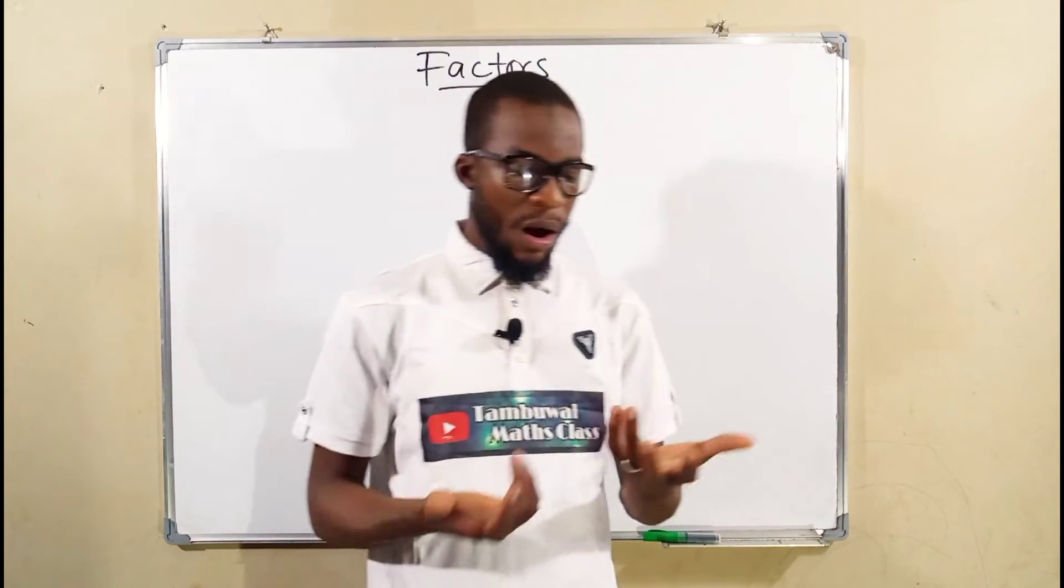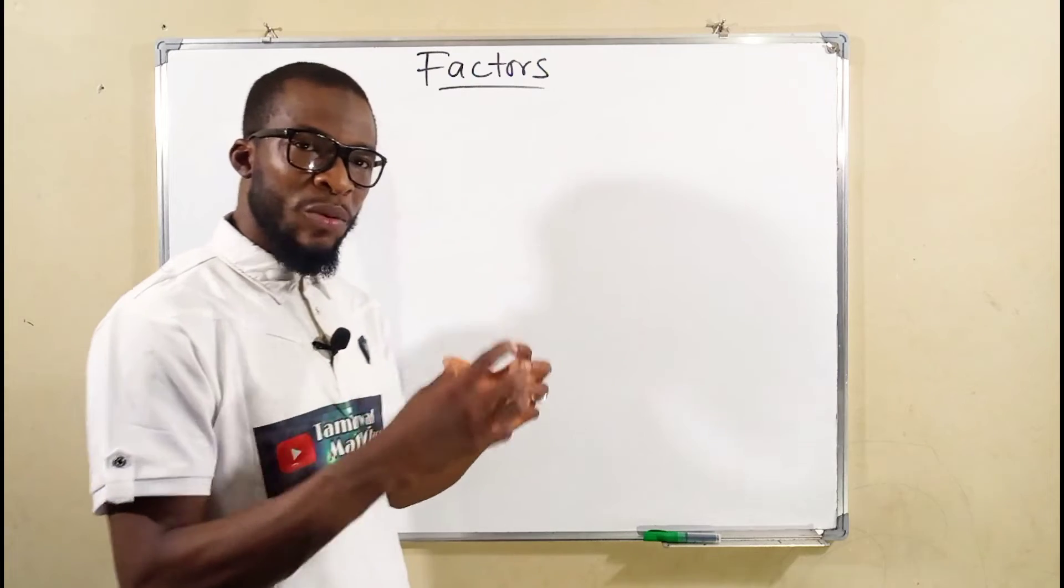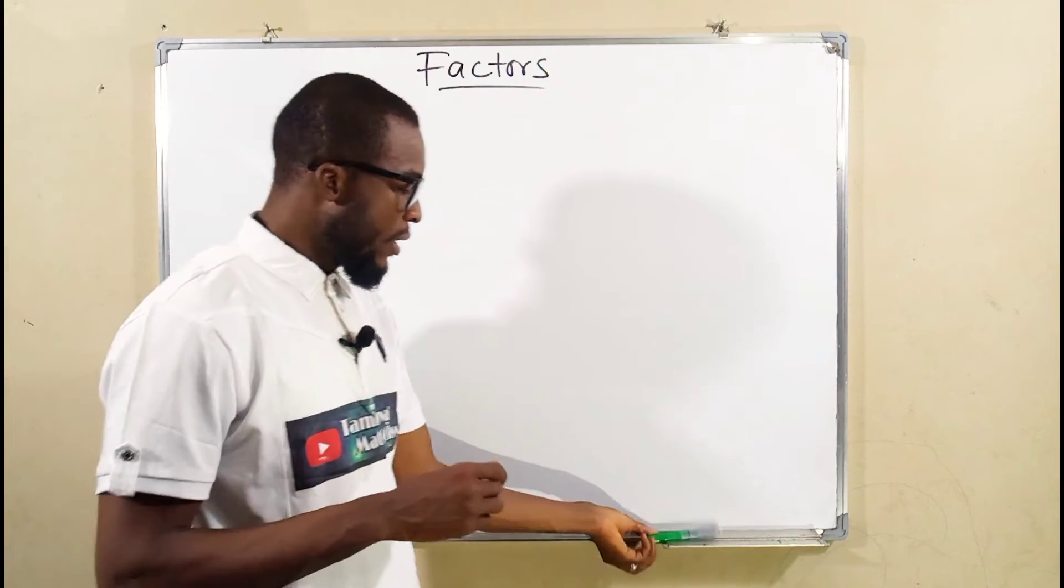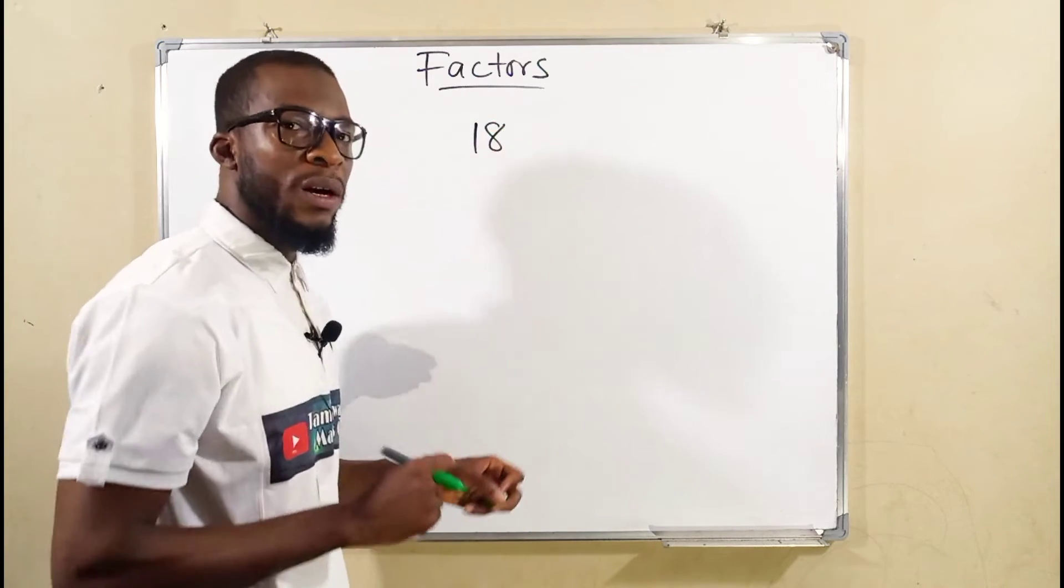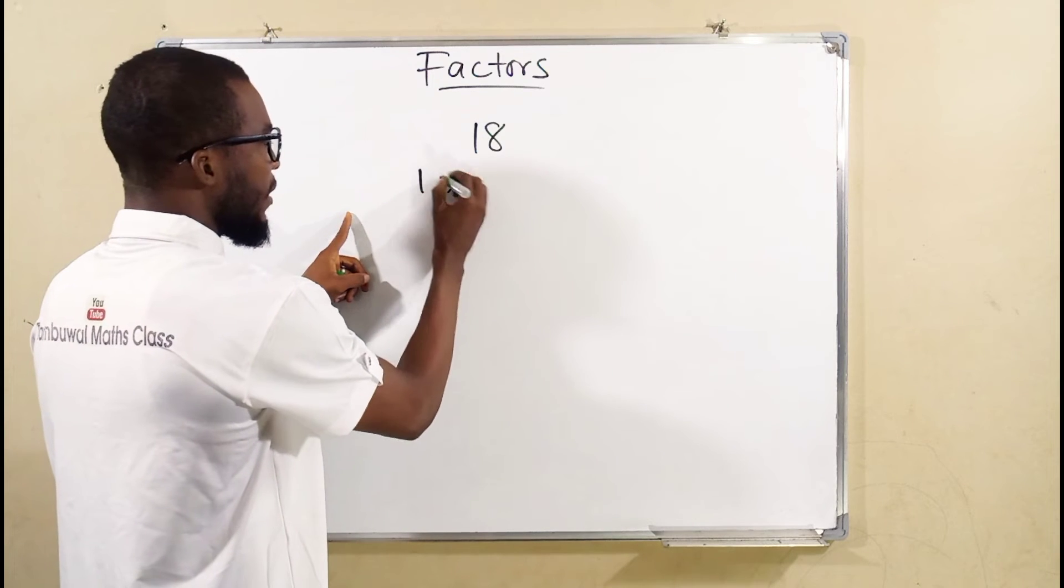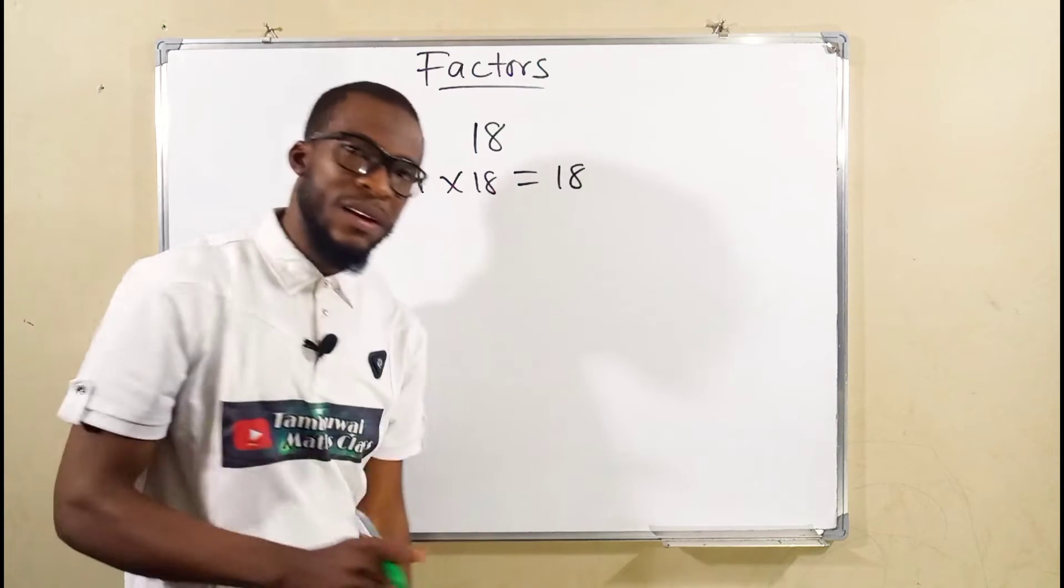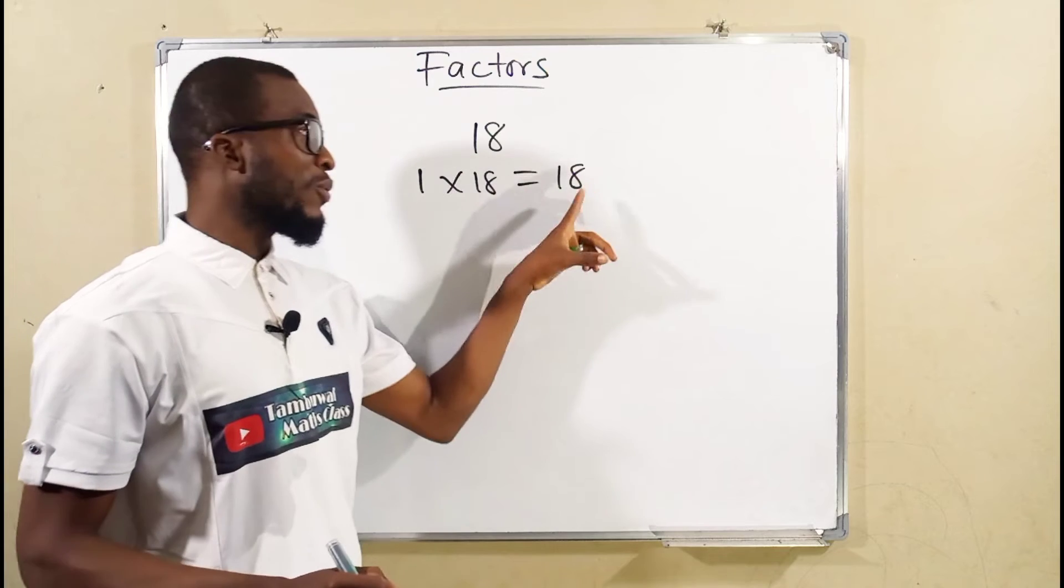The first way, we say the factors of any number are those set of numbers you can multiply together to get that number. Take for instance 18 as a number. I know if I multiply 1 by 18, I shall obtain 18. This is to say 1 and 18 are all factors of 18.